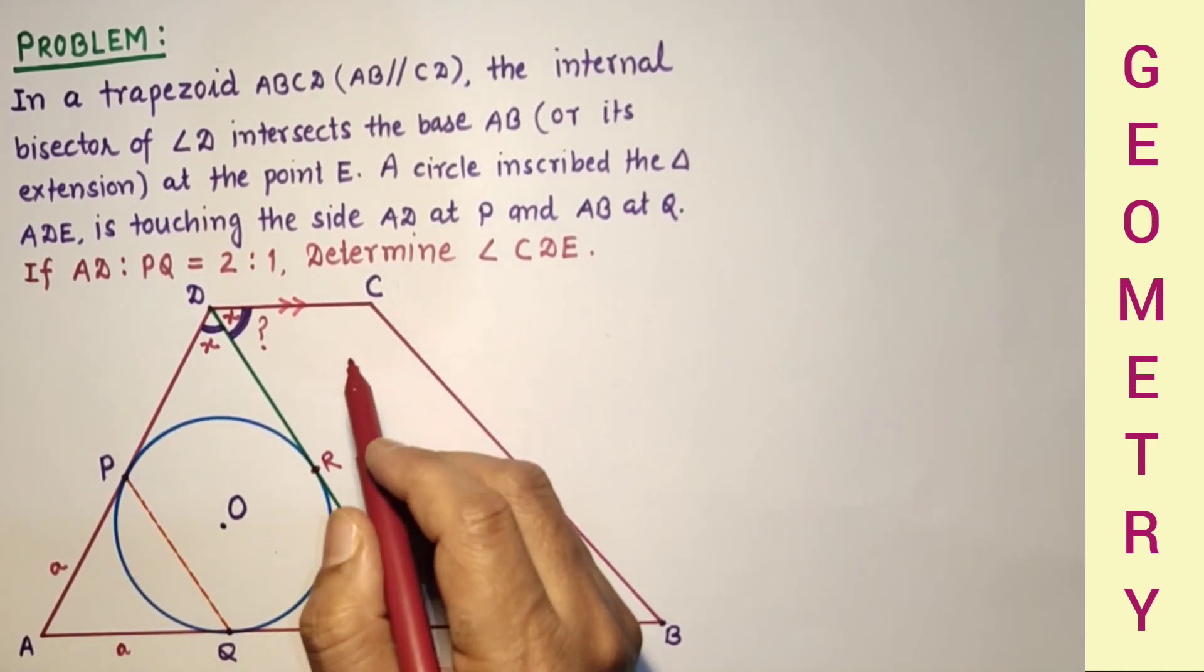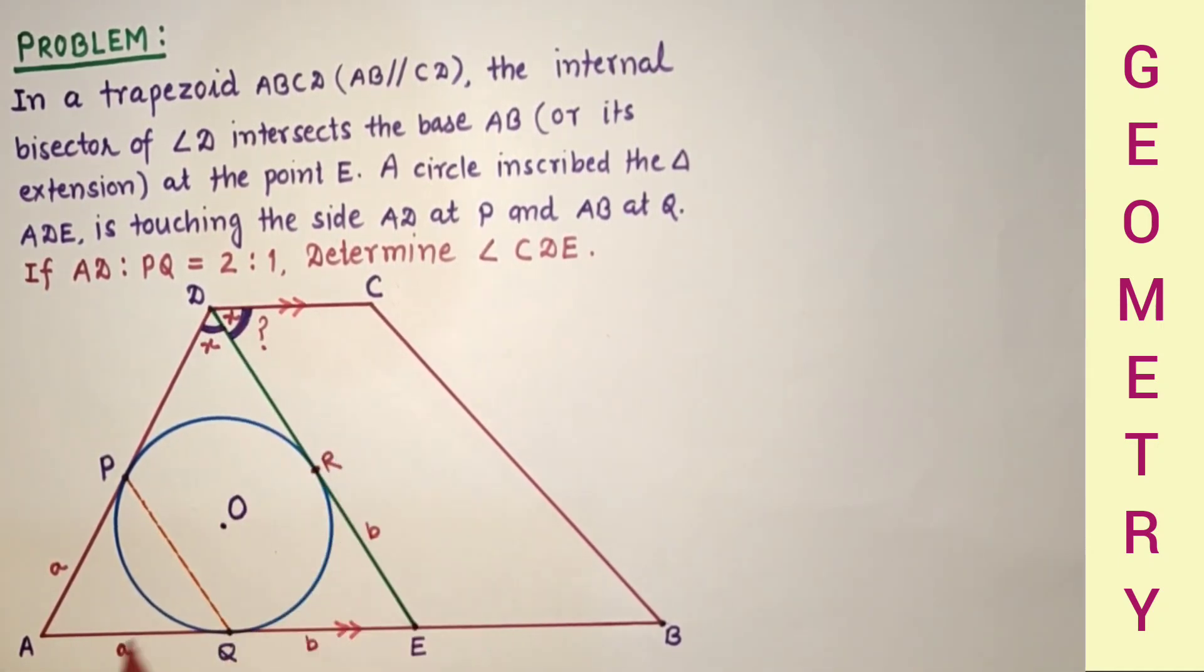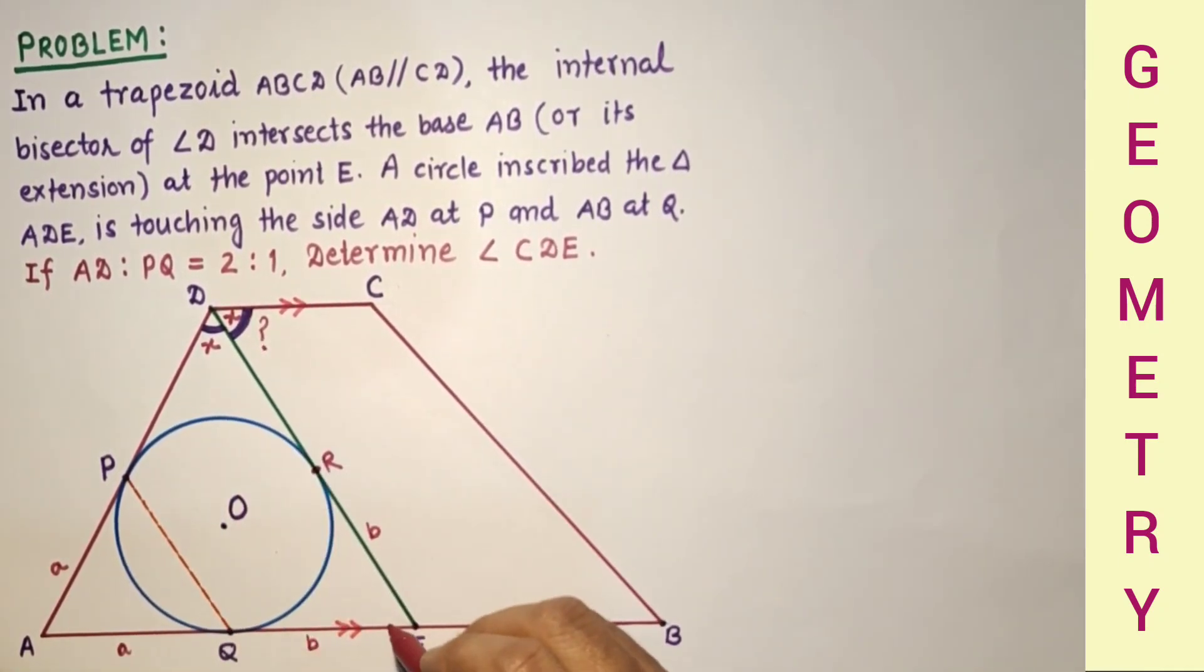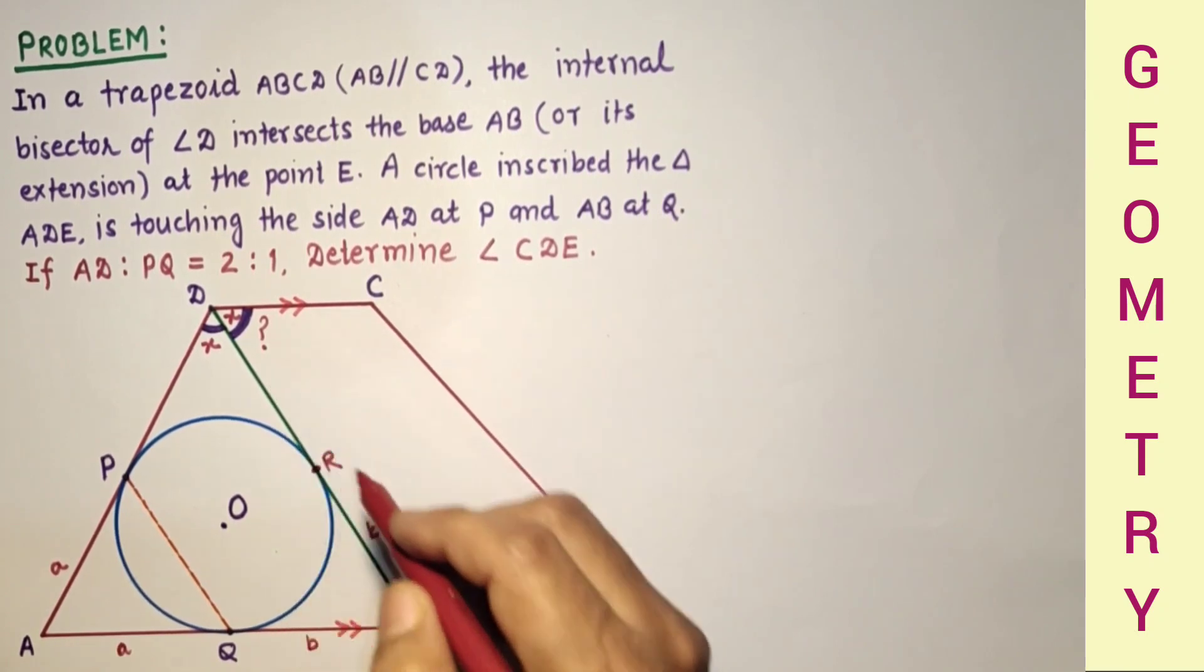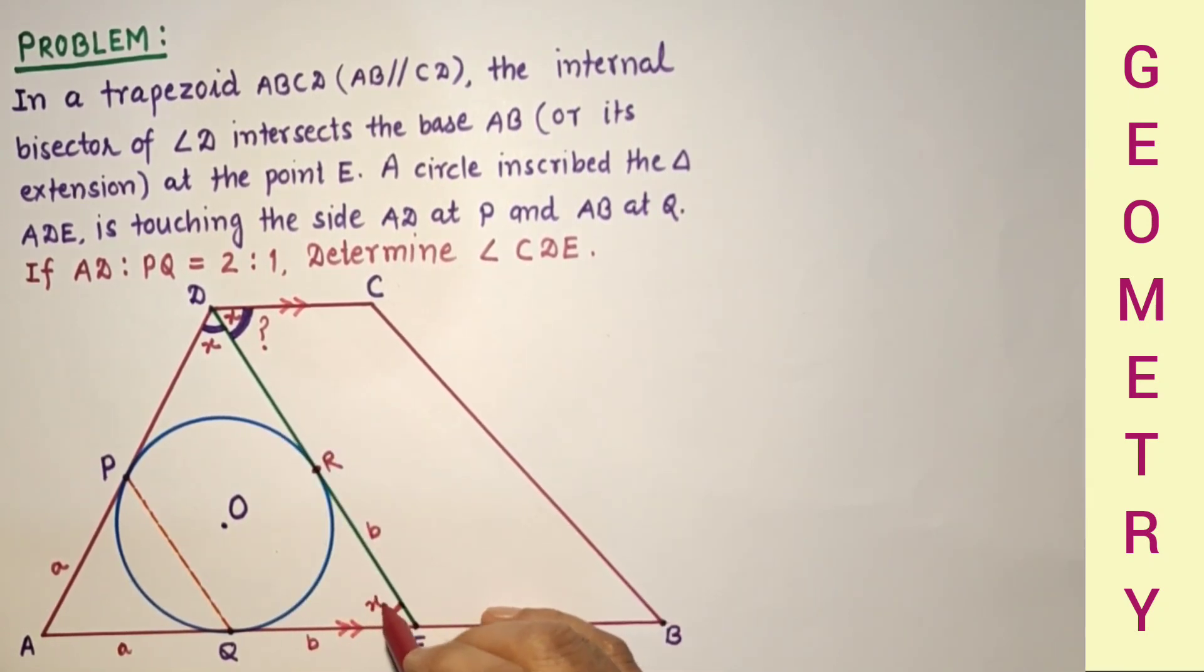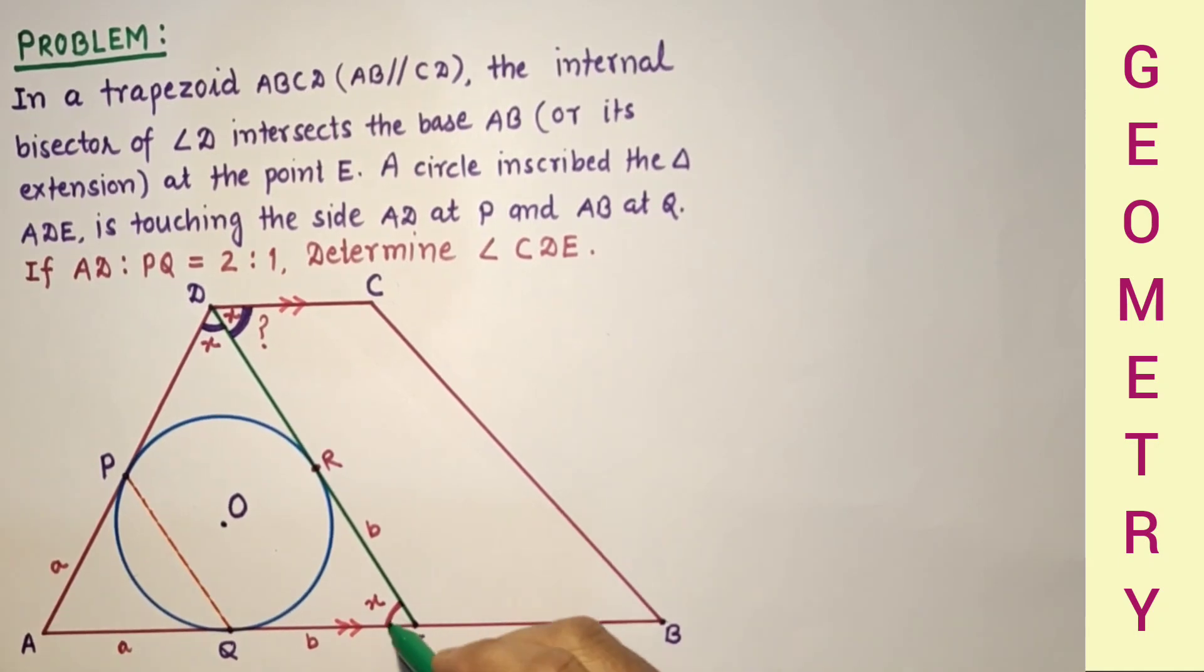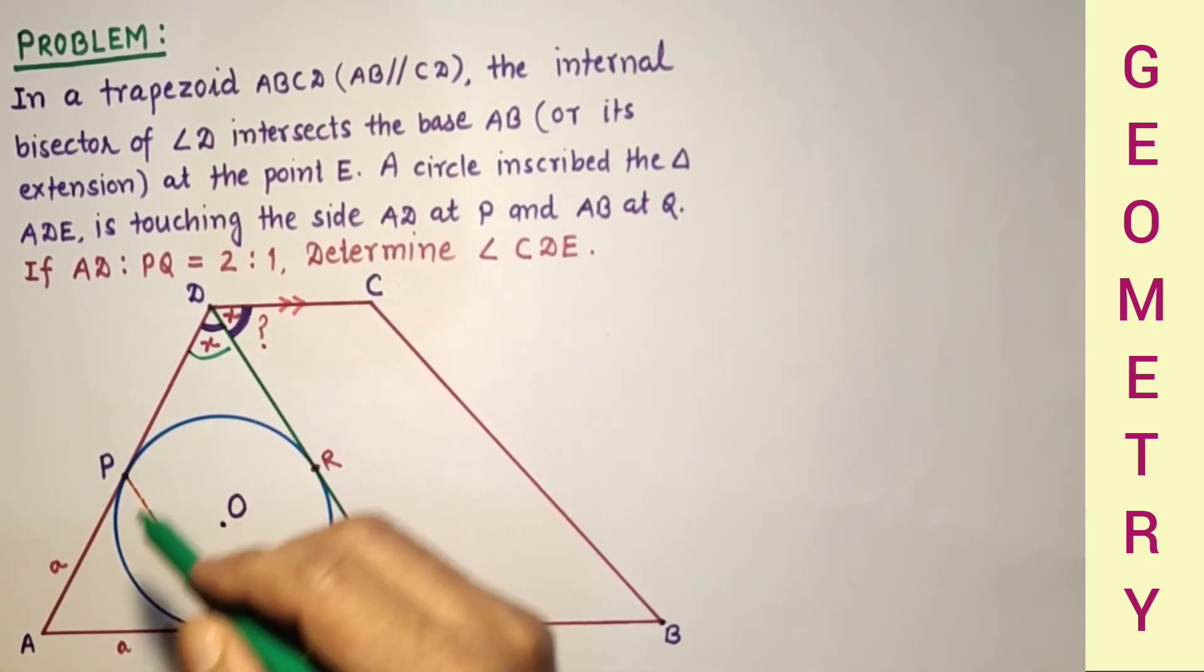Now, one more thing: DC is parallel to AB. Therefore, this angle will be equal to this angle. So this is also X because alternate angles are equal. This angle is X, this is X.